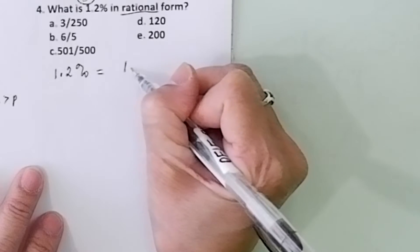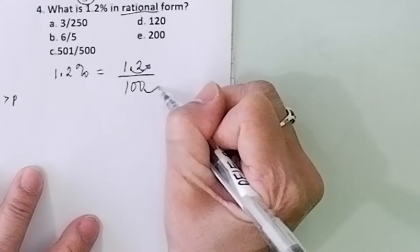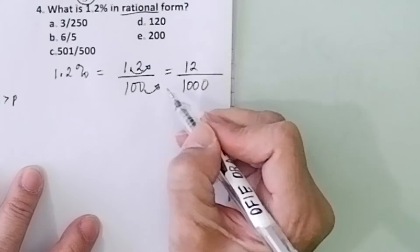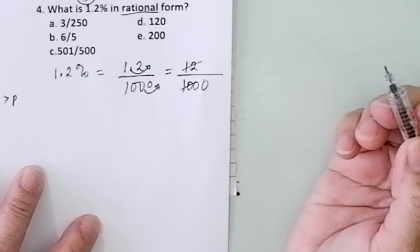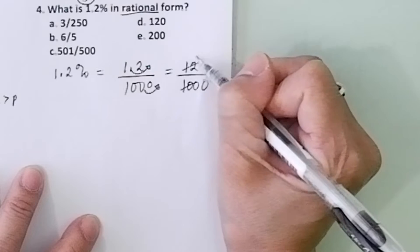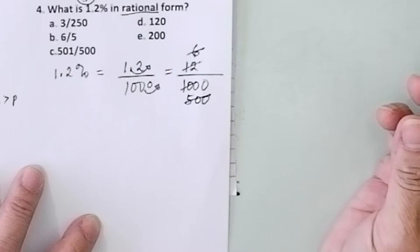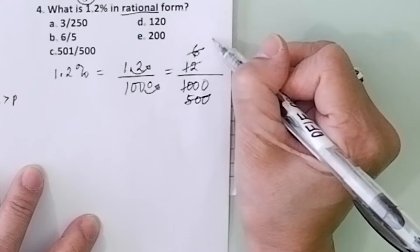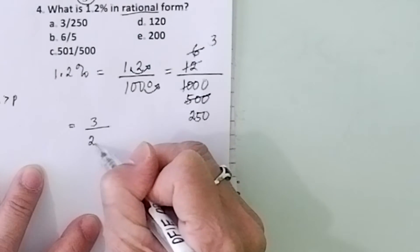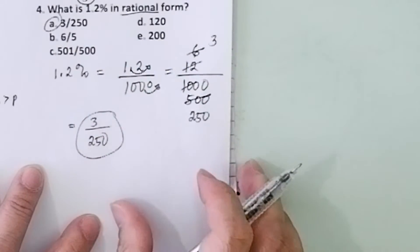Problem number 4. 1.2 percent means 1.2 per 100. Move the decimal point one place to the right, giving you 12 over 1,000. 12 and 10 are both divisible by 2: 12 divided by 2 is 6, 10 divided by 2 is 5 — so you have 6 over 500. But 6 and 500 are both even, so divide by 2 again: 6 divided by 2 is 3, 500 divided by 2 is 250. The final answer is 3 over 250. The answer is letter A.